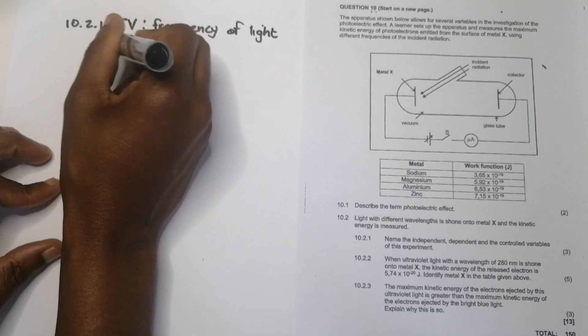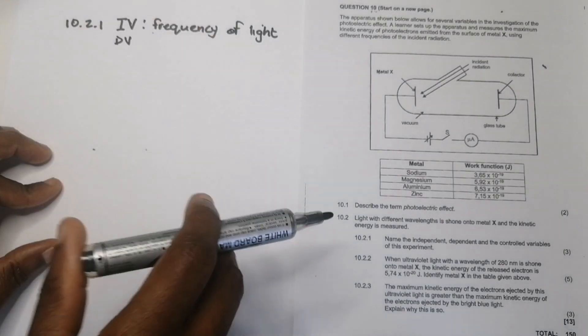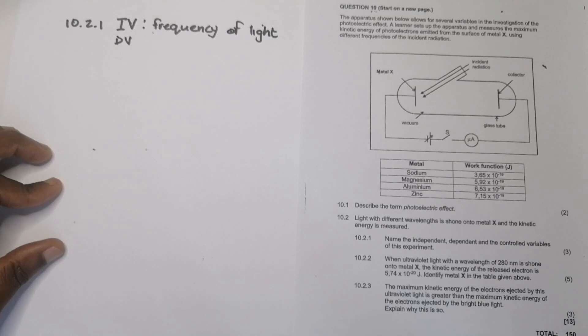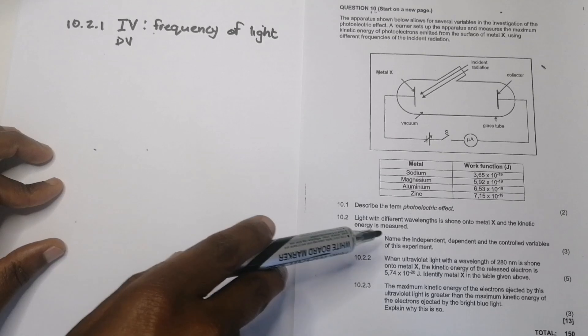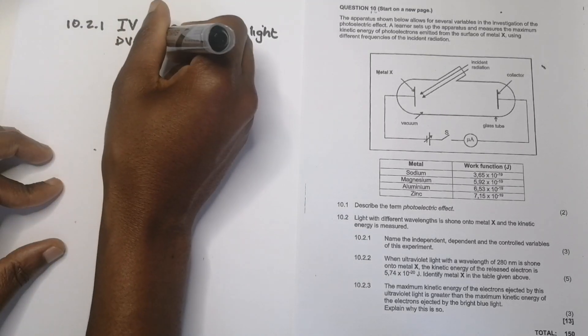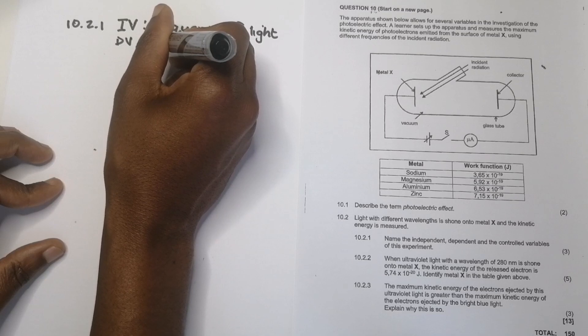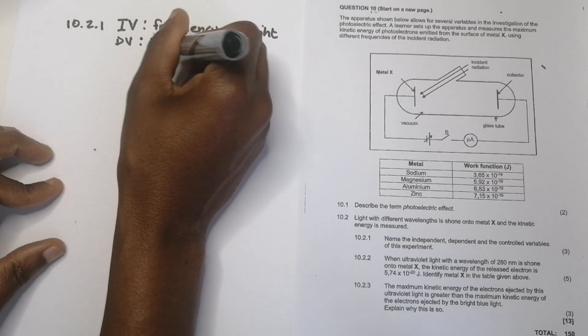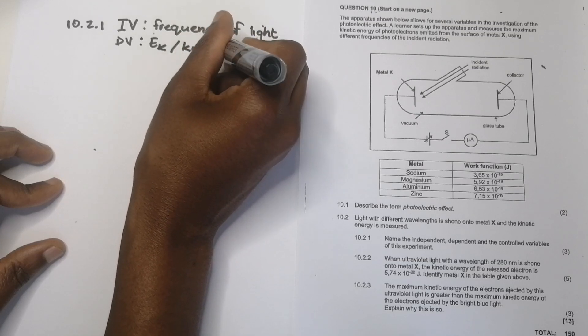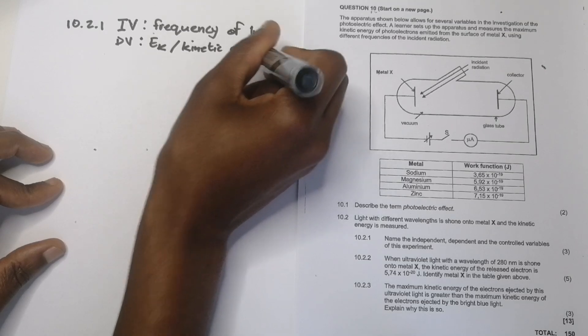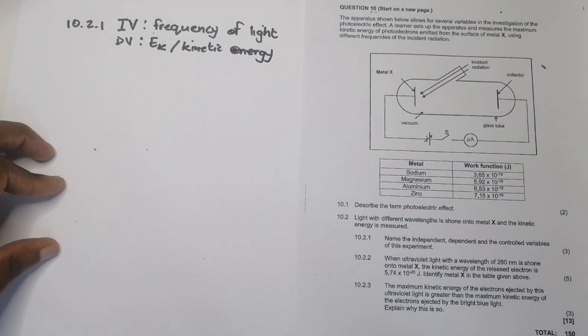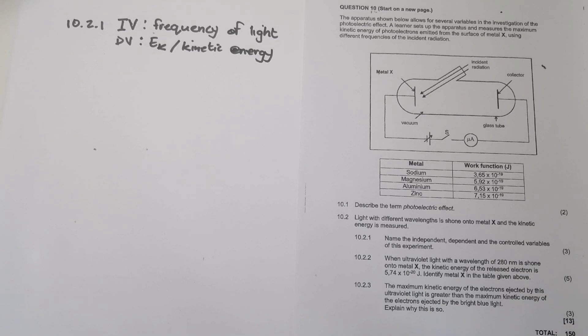OK. Right. And then what is our dependent variable? Remember, as I change the frequency, what does it do? It changes the kinetic energy. They said the kinetic energy is measured. So it means that the kinetic energy, E-K, or you can just simply write it out there. It's the kinetic energy of the ejected electrons. Right. Kinetic energy of ejected electrons. And what would be the controlled variables?